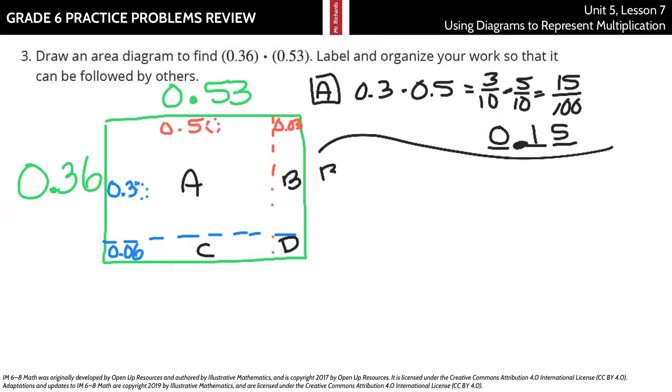What about B? B, we're looking at that smaller side being 0.03. Again, the 0.03 times this side is 0.3. And so we have 0.03 times 0.3, which is 0.009 or 9 thousandths.